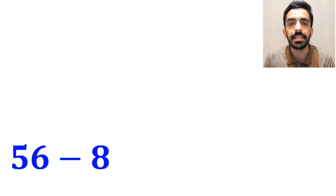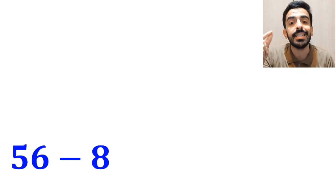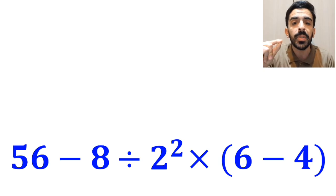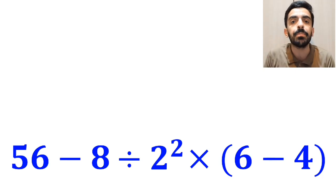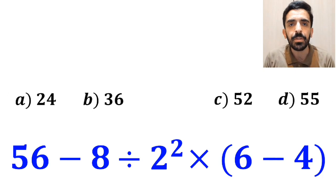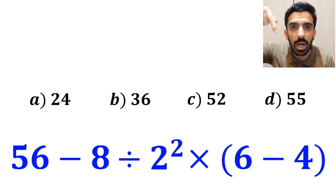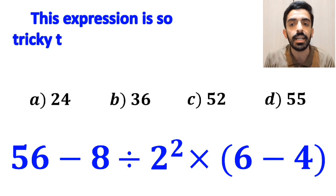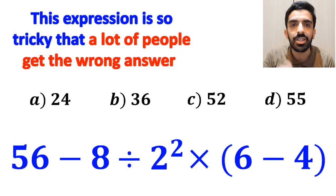What is the value of the expression 56 minus 8 divided by 2 squared, then multiplied by open parenthesis 6 minus 4 close parenthesis? Which option do you think is the correct answer to this question? This expression is so tricky that a lot of people get the wrong answer.